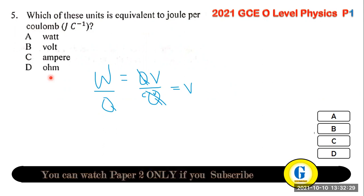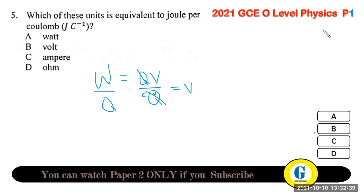Question 5: which unit is equivalent to the joule per coulomb? We know work = charge × voltage, where charge is in coulombs and voltage is in volts. If we divide work (in joules) by charge (in coulombs) we get volts — so the volt is the same as the joule per coulomb. The answer is B.